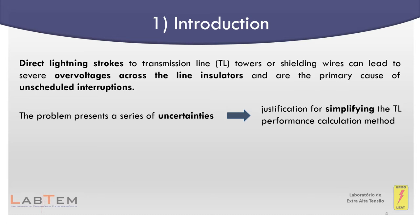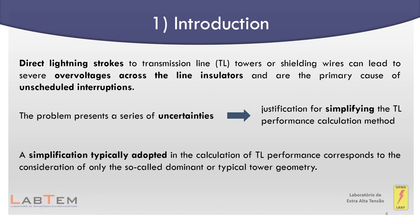A simplification typically adopted in the calculation of transmission line performance corresponds to the consideration of only the so-called dominant or typical tower geometry. This simplification, however, can lead to deviations in the estimation of the line outage rate, especially in cases where the line is composed of more than one type of structure.